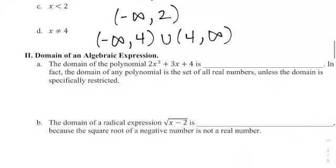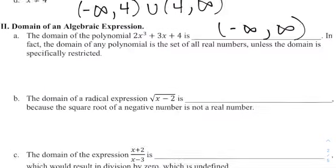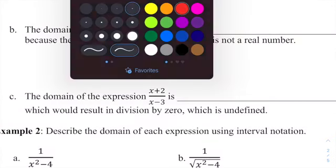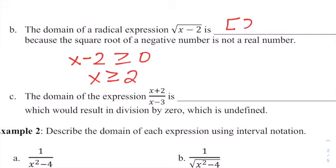Now let's consider the domain of algebraic expressions. The first is a polynomial, 2X cubed plus 3X plus 4 — there are no restrictions on the domain. That's a cubic function, so it's all real numbers, represented as negative infinity to positive infinity with parentheses. For a radical expression, we must restrict the domain — you can only have positive numbers under the square root. So X minus 2 must be greater than or equal to 0, meaning X is greater than or equal to 2, written as bracket 2 to positive infinity.